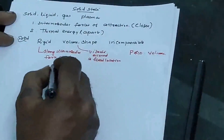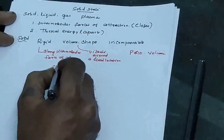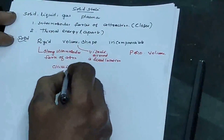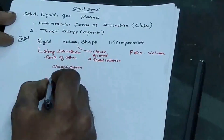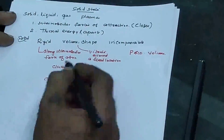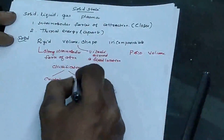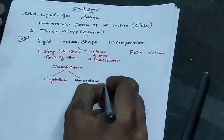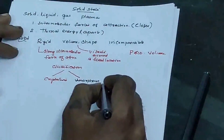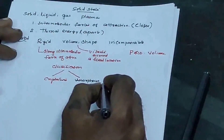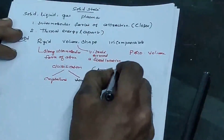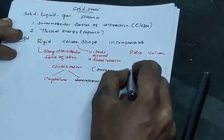Classification of solids: Solids are classified into crystalline and amorphous, based on the nature of arrangement of particles — that is, the order of particles in their position.